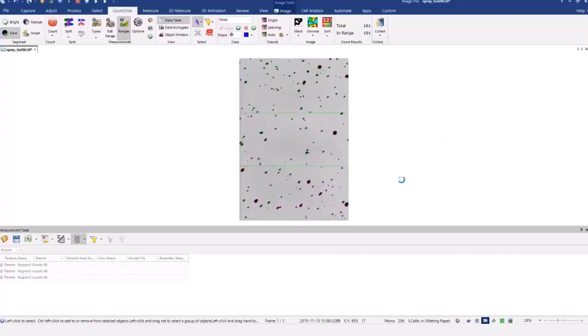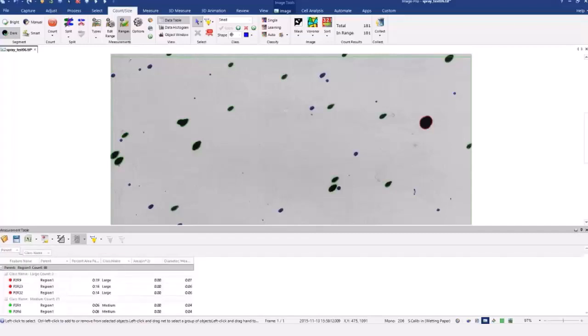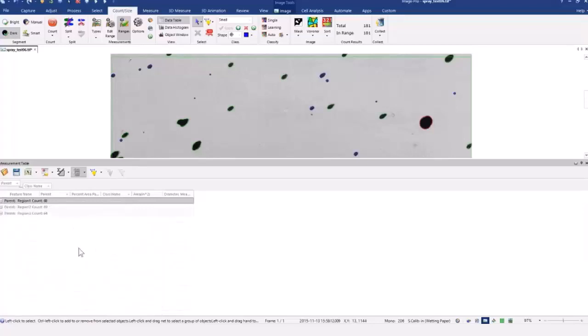When I press the OK button, you can see, if I zoom in a little bit, these are all now color-coded into my three bins. I can now further take this, and this is where I mentioned, if I bring the class name, I can drag that to here. And now I have all the data for each of my parent regions.